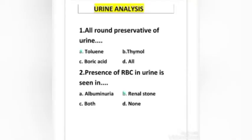First question: all-round preservative of urine. Options: toluene, thymol, boric acid, all. Right answer is option A, toluene. Toluene is used at 2 ml per 100 ml of urine.